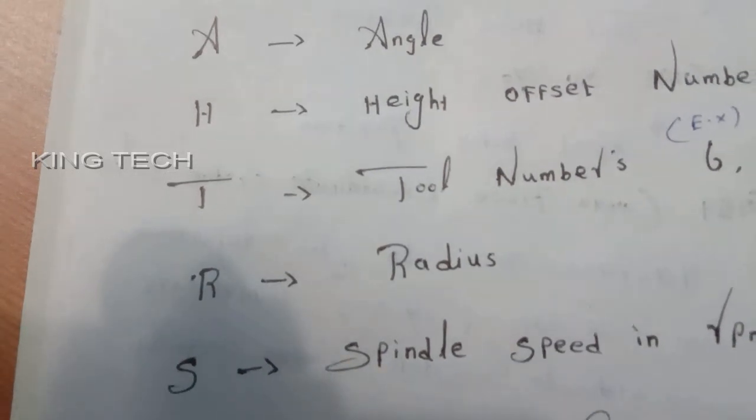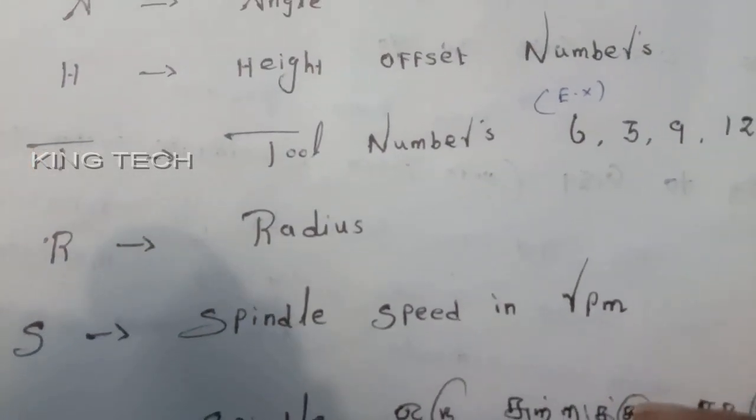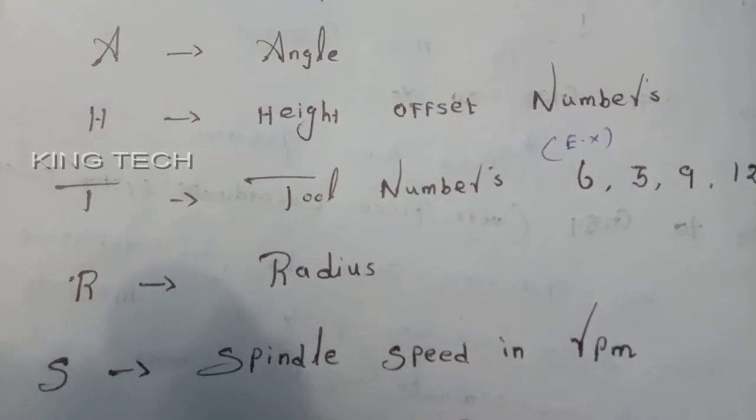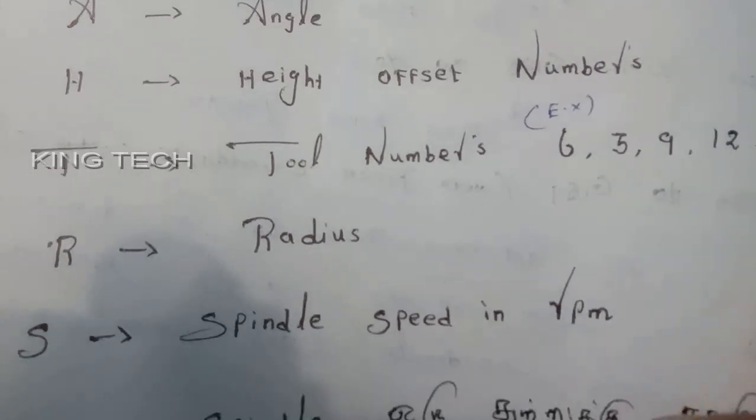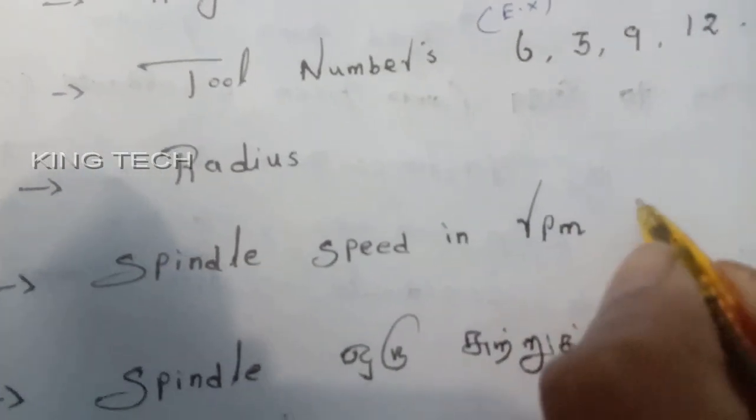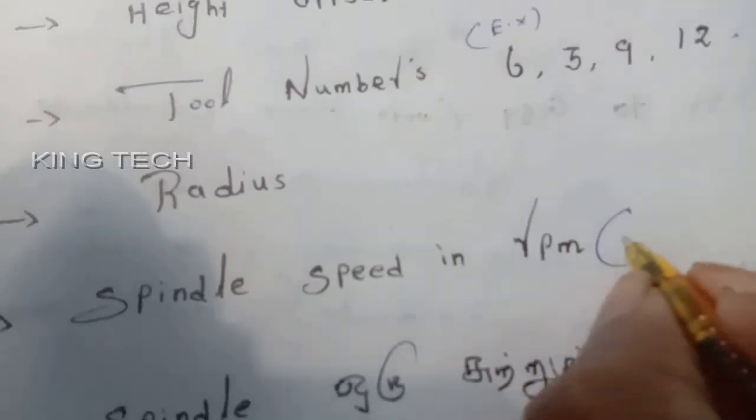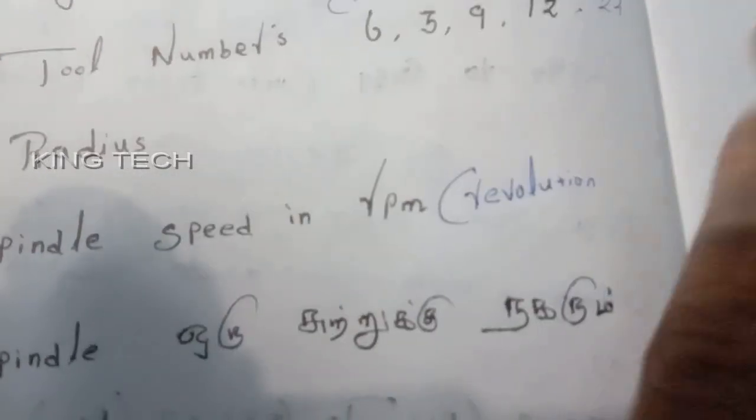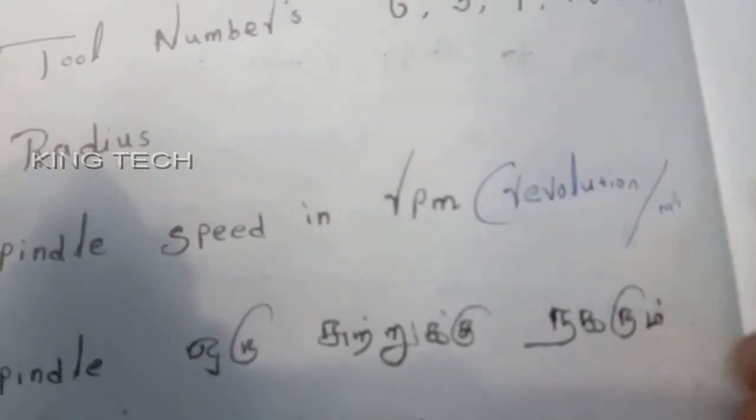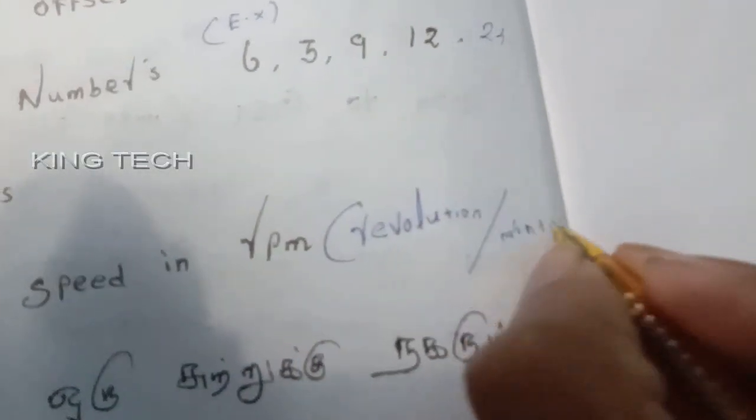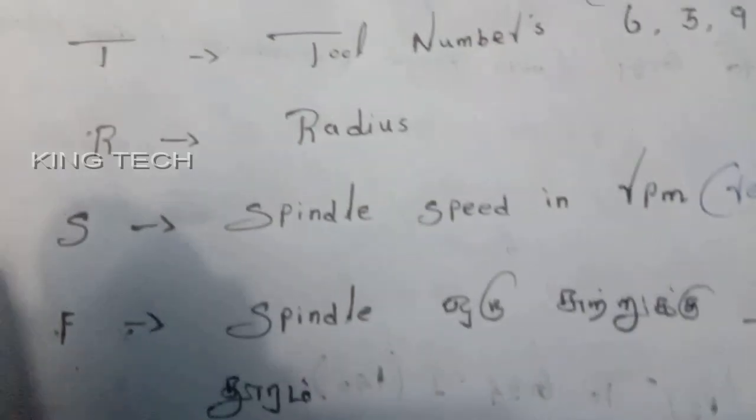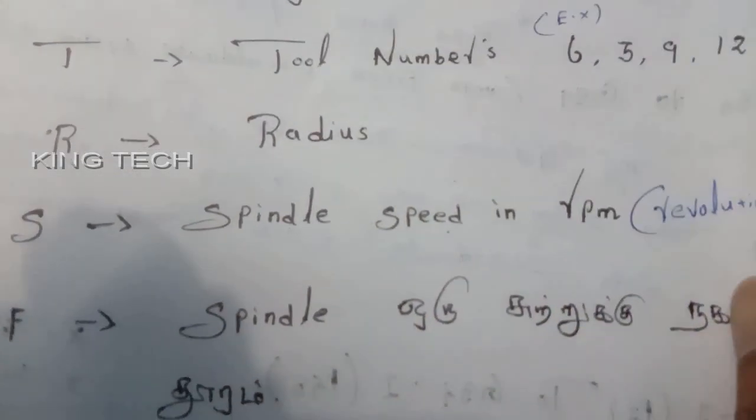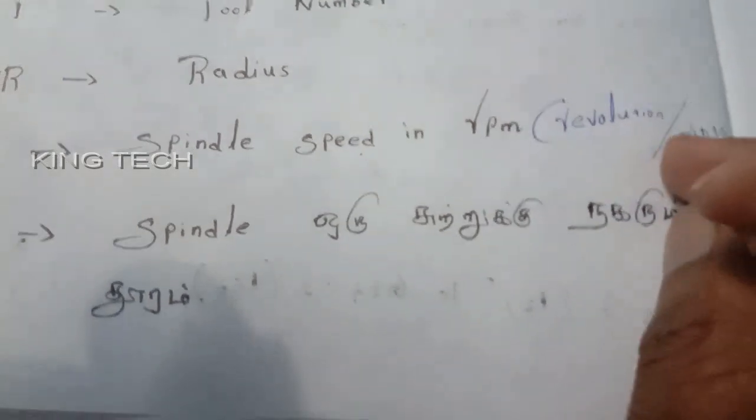S means spindle speed in RPM. Spindle speed in RPM, this is unit. Revolution per minute. You can understand, S means spindle speed. Spindle speed is RPM. RPM means unit, revolution per minute.